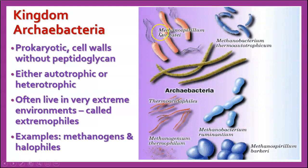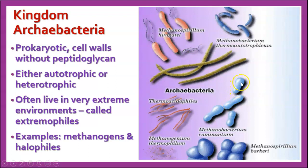Looking at the names: Methanosporillum, Methanobacterium thermoautotrophicum — that means 'hot self-feeders,' meaning they're autotrophic and live in hot areas. Thermoacidophiles, meaning they like hot, acidic environments — very extreme places. Some are also found in, for instance, Methanobacterium ruminantium, which is probably found in the rumen of animals like cows and goats. So extreme environments, not just your everyday bacteria that you come in contact with.